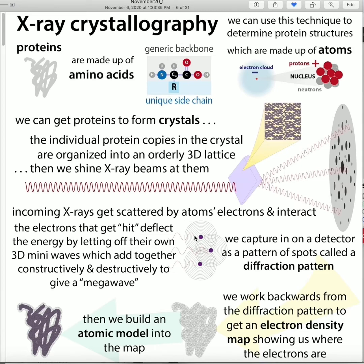Then what you do is work backwards from that series of spots — from that diffraction pattern — to get the electron density map. That weird blobby meshy thing shows you the position of the electrons. Then you build the atomic model into that map: you know the electrons are in this area, the center of the atoms will be in the center of that, and you build the atomic model into the map.